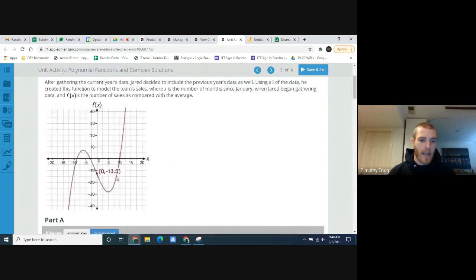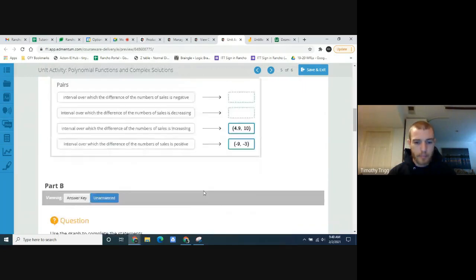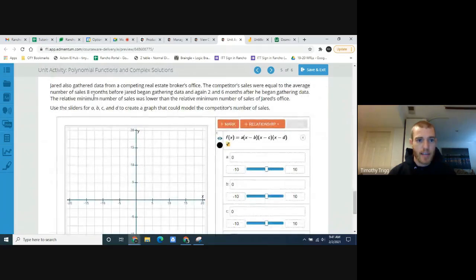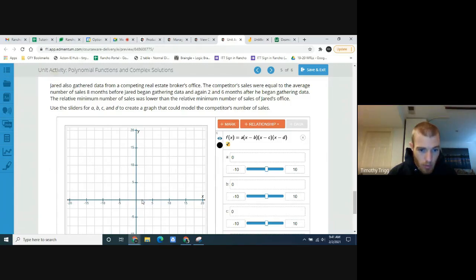So in other words, this new function we're going to make has a lower valley to it. This one's valley was like at, it looks like negative 20-something, negative 27 maybe, negative 28. So we need to make it go lower than that. And it has these x-intercepts. So it has an x-intercept at eight months before. So that'll be an x-intercept at negative 8, somewhere around here. And also at 2 and at 6. So 2 here-ish and 6 here-ish.